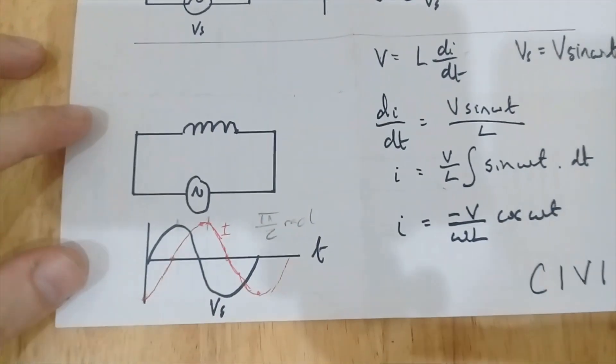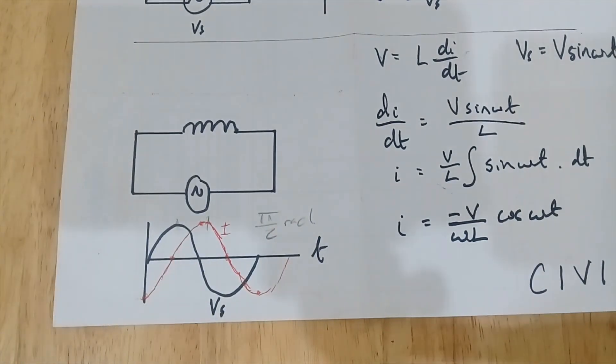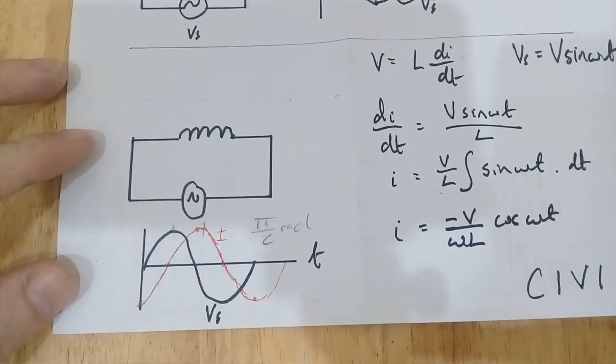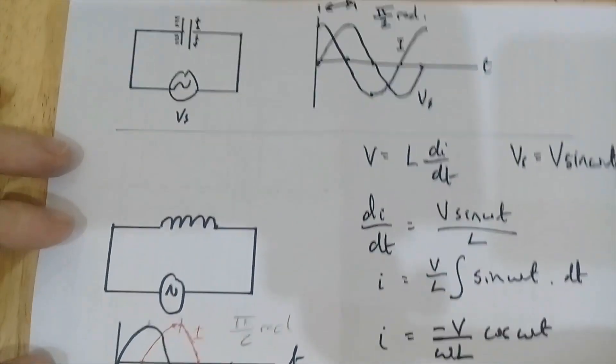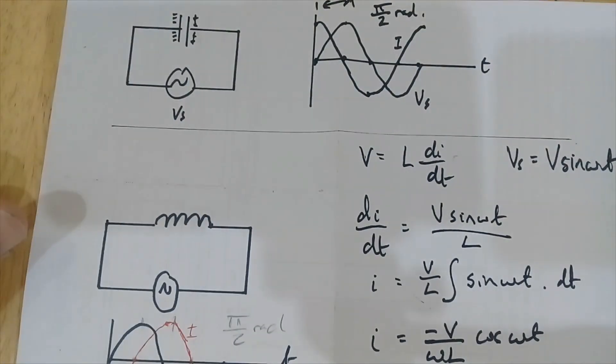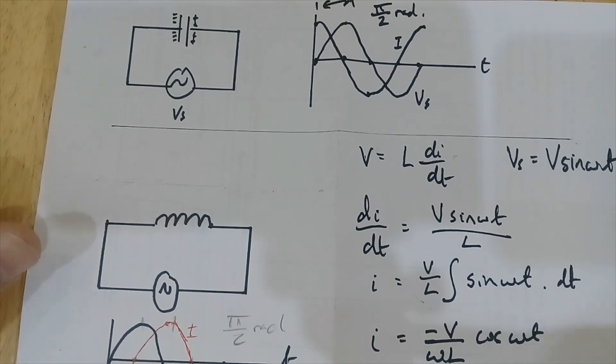But when we've got shifted voltages and currents in different phases, I times V is not going to give us what we would expect through a purely resistive circuit. When you introduce capacitive effects and inductive effects in big electrical systems, we have to consider that in our calculations.